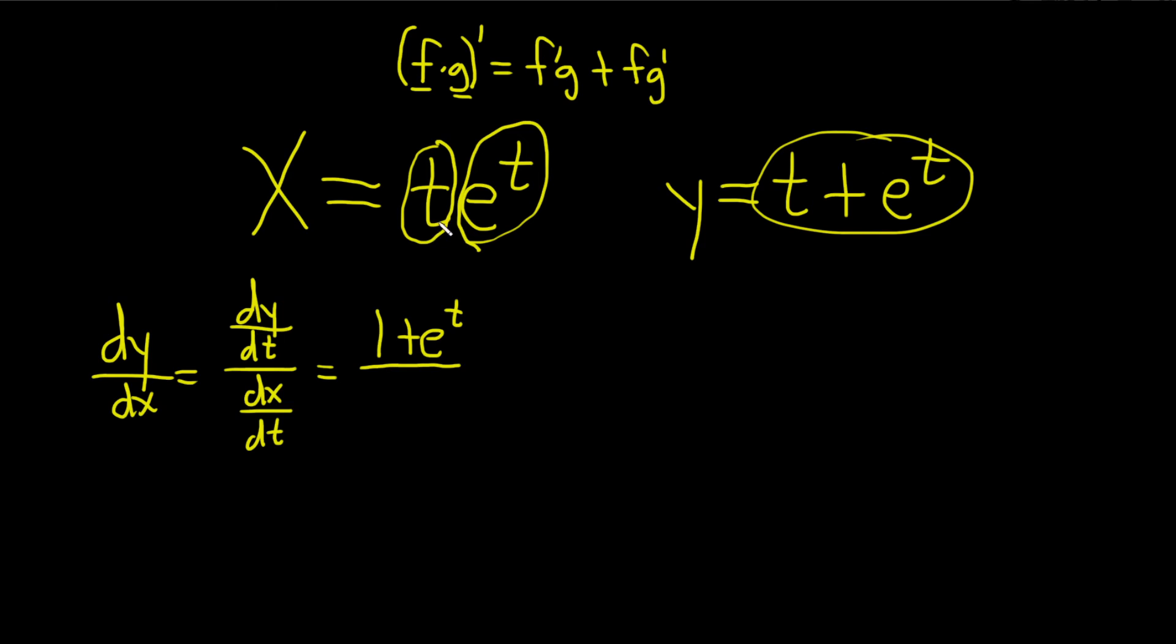So it'll be the derivative of the first. So the derivative of t is 1 times the second, e to the t, plus the first which is t times the derivative of the second. So the derivative of e to the t is just e to the t. Let's just check that. The derivative of the first is 1 times the second plus the first times the derivative of the second. Yep, everything looks okay.